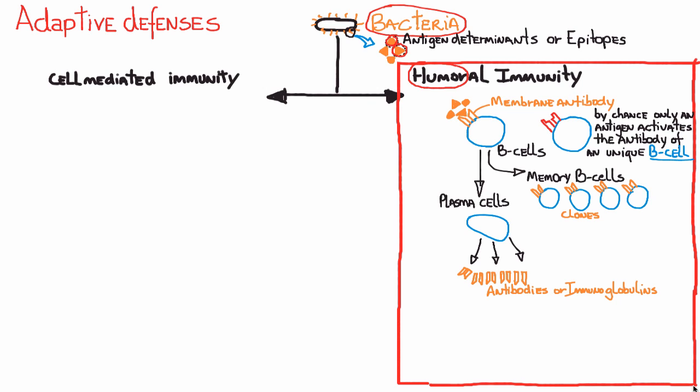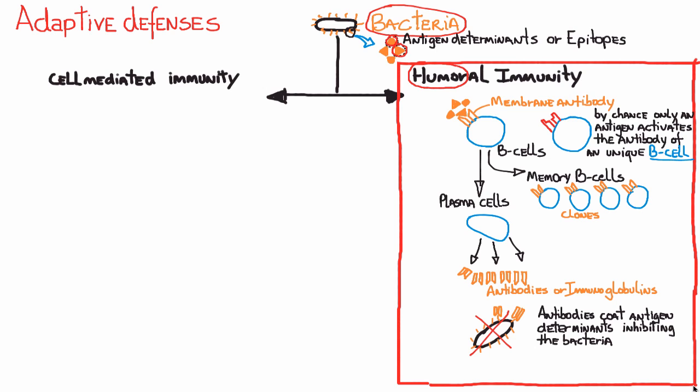There are different kinds of antibodies with different functions. Generally speaking, these antibodies can coat the bacteria and inhibit its multiplication — they can neutralize the bacteria, precipitate it, make it sink down. There are a variety of ways antibodies make bacterial multiplication more difficult. Eventually, this humoral immunity is enough to fight the infection and get rid of the disease.